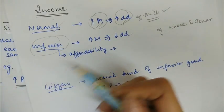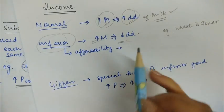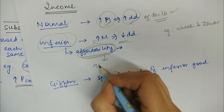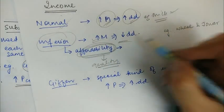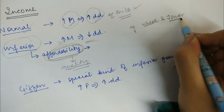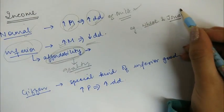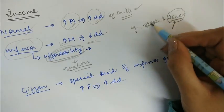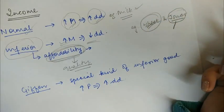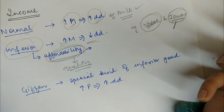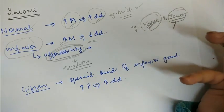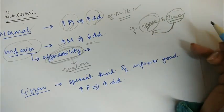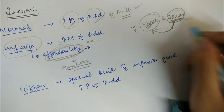For inferior goods, with an increase in income, the demand for the good decreases. This inferiority is related to affordability, not the quality of the good. For example, consider wheat and jowar. A person consuming jowar, upon an increase in income, will shift to wheat — which they can now afford — causing the demand for jowar to fall.